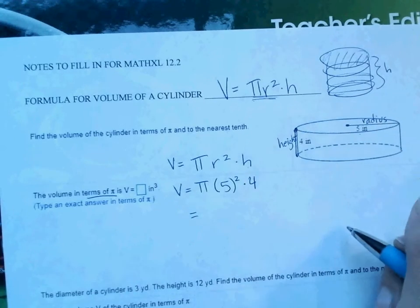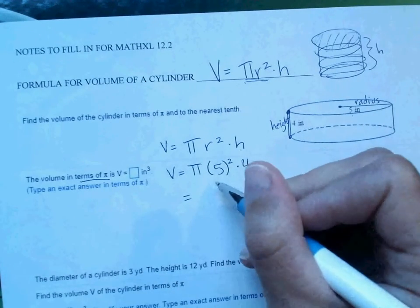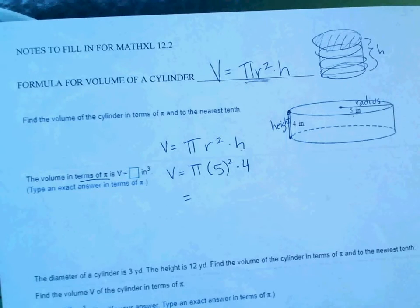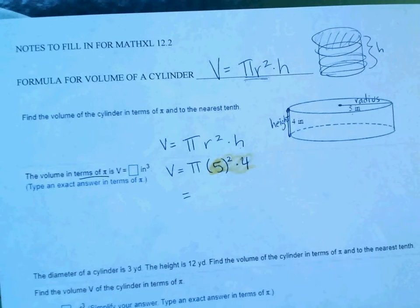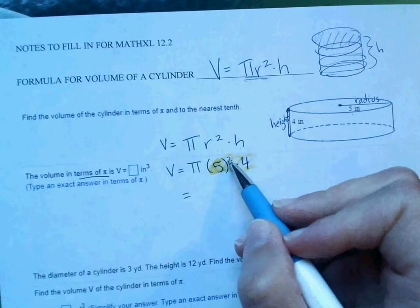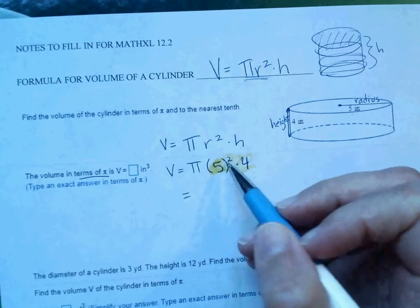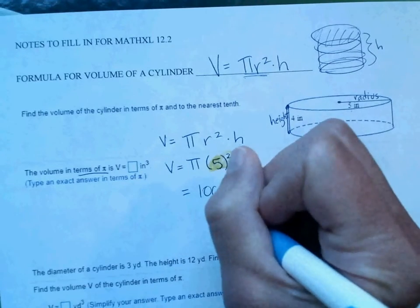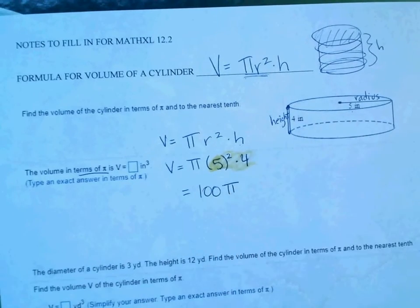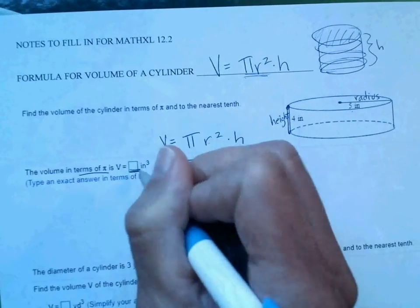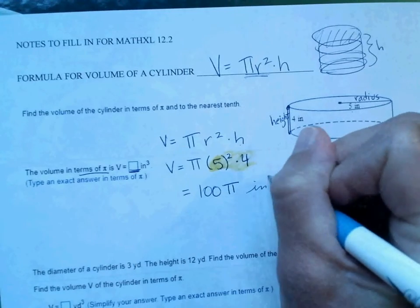Since it says in terms of pi, you are going to multiply these numbers on your calculator, and then just put a pi on your answer. So 5 squared, you can do it in your calculator if you want, or in your head. That's going to end up with 100 pi for your answer, and that's what you would fill in the blank here. And notice it's inches cubed for volume.